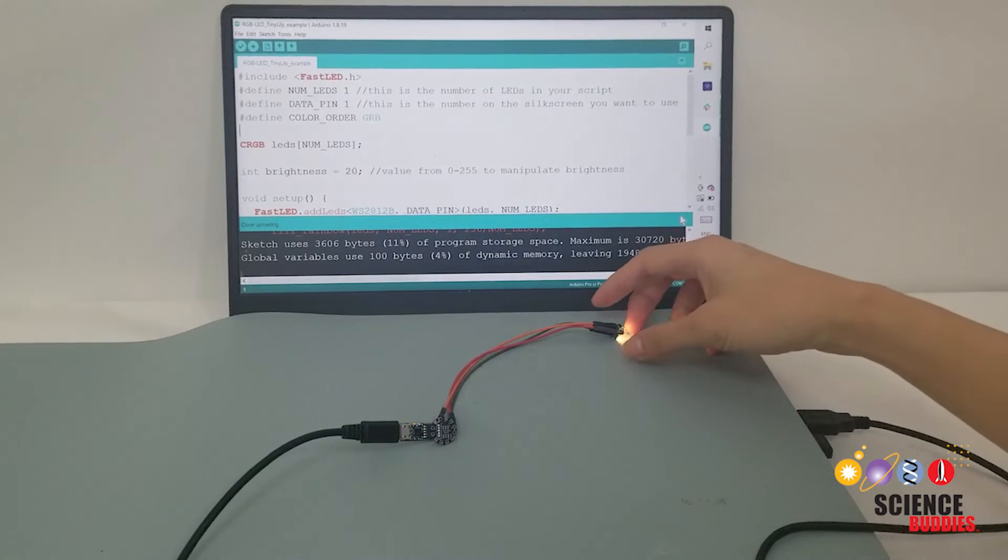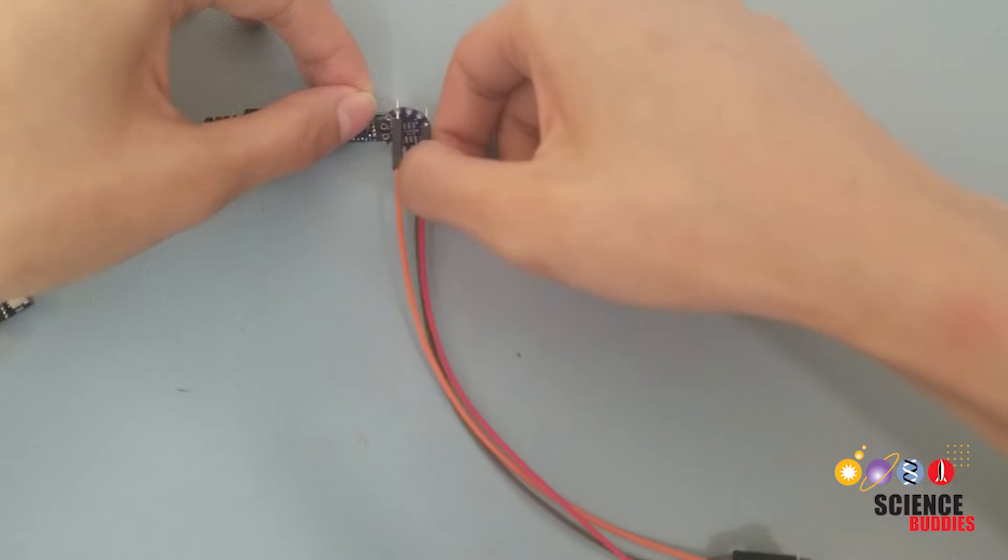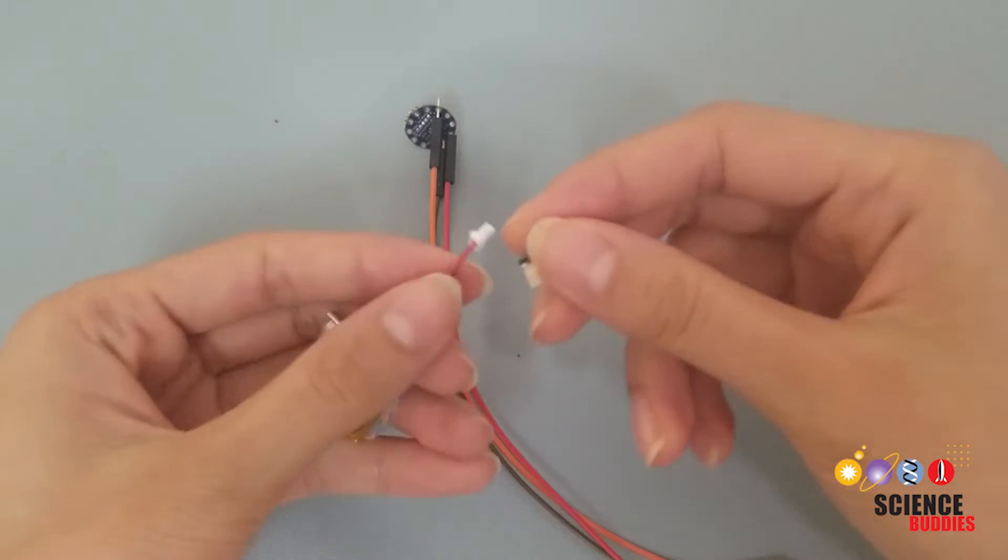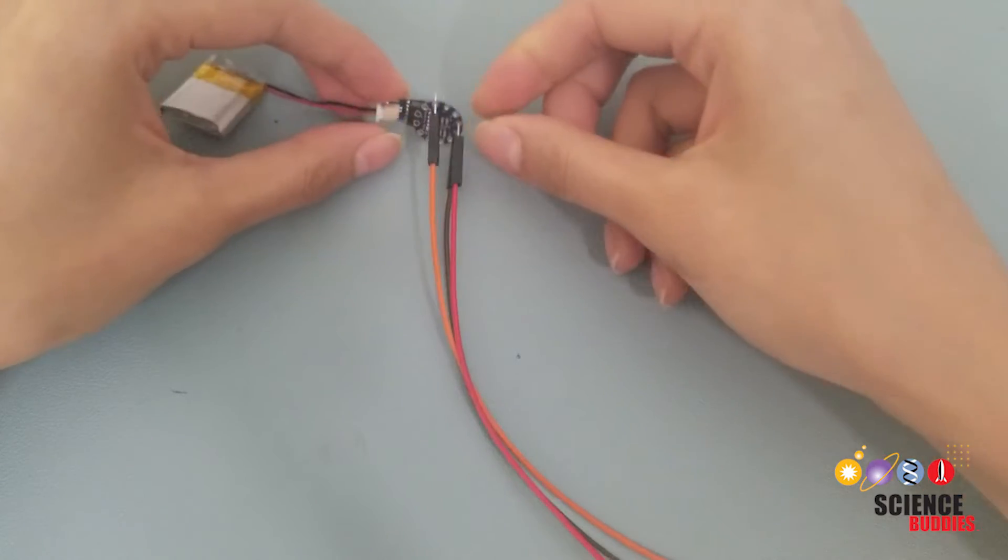If not, double-check your wires to make sure they are in the correct pins. Also, make sure they are not too loose. Now, switch your USB adapter with your battery adapter and power the TinyLily mini processor with a LiPo battery. The circuit should perform the same.